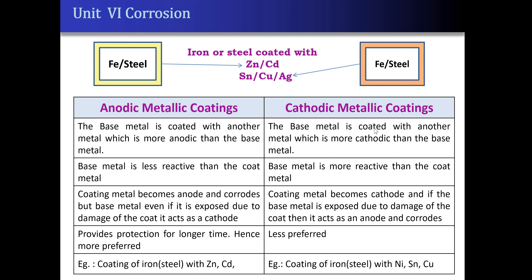Whereas, in cathodic metallic coatings, the base metal is coated with a more noble metal; that is, the base metal is more reactive than the coating metal. Here, if there is damage to the coating, the base will act as anode and undergoes corrosion, whereas the coating — which is of noble metal like silver, copper, tin, or gold — acts as cathode and therefore does not undergo corrosion. Therefore, this type is less preferred.